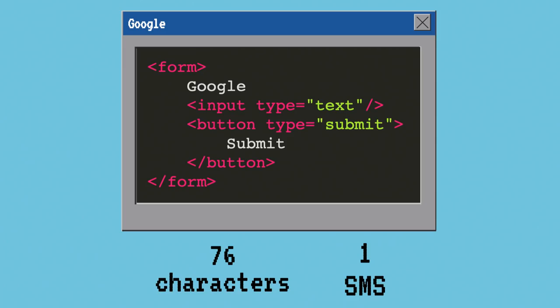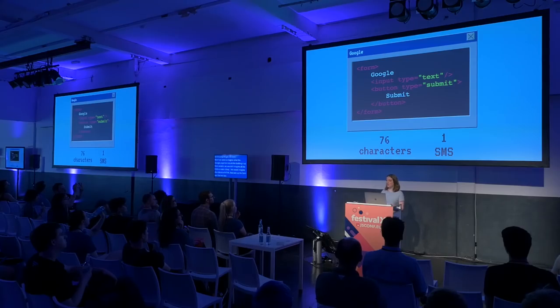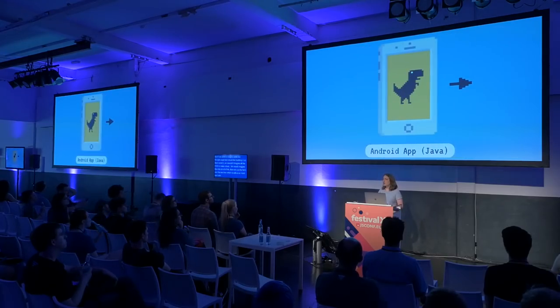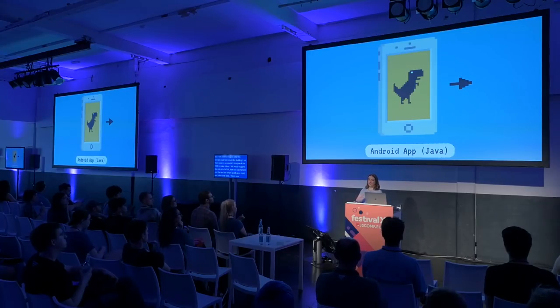But if we were to imagine what the Google page looked like built from scratch, we wouldn't imagine all the CSS or external sources — we would just imagine the little bit of HTML that sets up the form and the text box, which is really all we need. And that only takes one SMS. So this is how we're going to have to envision web pages to make this project work. We'll walk through the life cycle of a request, starting on the Android side in the app.